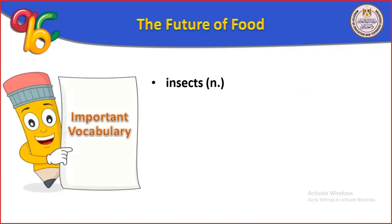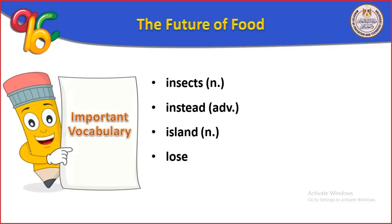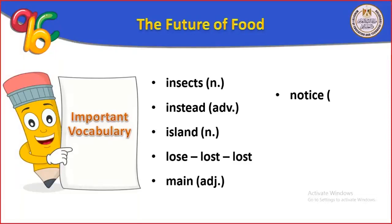Insects (حشرات). Instead (بدلاً من). Island (جزيرة). Lose (يفتقد), past tense lost. Mean (يعني). Notice (يلاحظ). Ocean (محيط). Offer is a verb meaning يقدم (to offer).